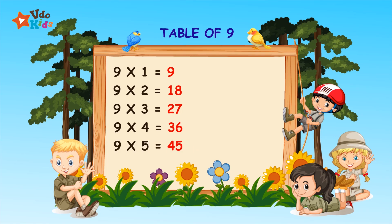9 fives are 45. 9 sixes are 54. 9 sevens are 63.